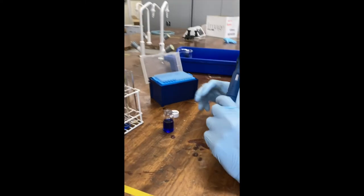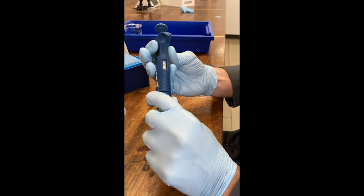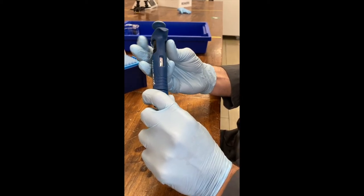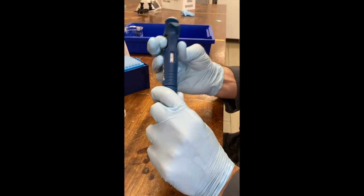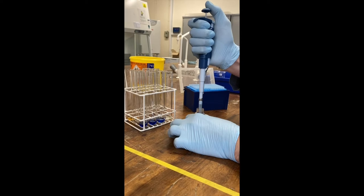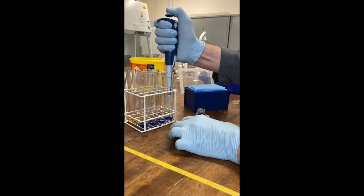Now for the final one, I have one and a half mils of water. So I'm going to go down to 500 on the pipette. Make sure you lock it. Put that up and down a couple of times.